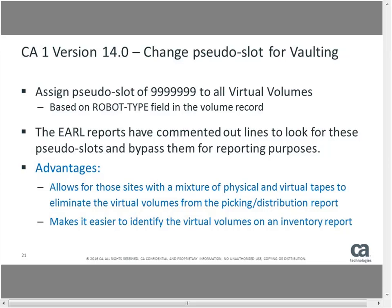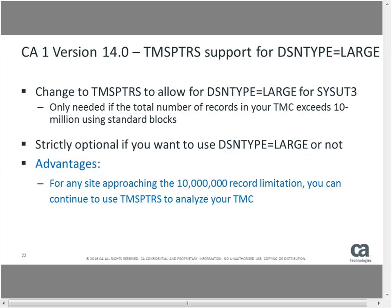We also made a change to TMS Pointers to support DSM TYPE=LARGE for the SISUT3 DD statement. The SISUT3 is where we make a point-in-time copy of the TMC that we then analyze. By supporting DSM TYPE=LARGE for the SISUT3, we now allow you to run Pointers against a TMC that exceeds 10 million total records. If you have a very large TMC with a combination of volume and DSMB records exceeding 10 million total records, you can now run TMS Pointers against it.